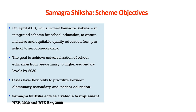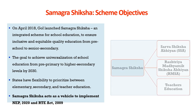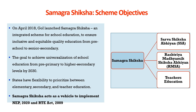The Samagra Shiksha Abhiyan is an integrated scheme for school education to ensure inclusive and equitable quality education from preschool to senior secondary. The goal is to achieve universalization of school education from pre-primary to higher secondary levels, with states having flexibility to prioritize between elementary, secondary, and teacher education. It acts as a vehicle to implement NEP 2020 and the Right to Education Act of 2009, and encapsulates the Sarva Shiksha Abhiyan, the Rashtriya Madhyamik Shiksha Abhiyan, and teacher education.